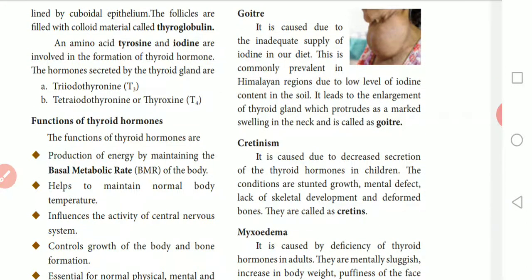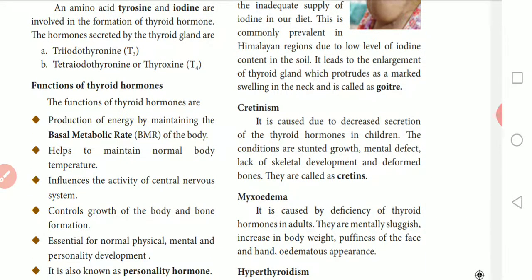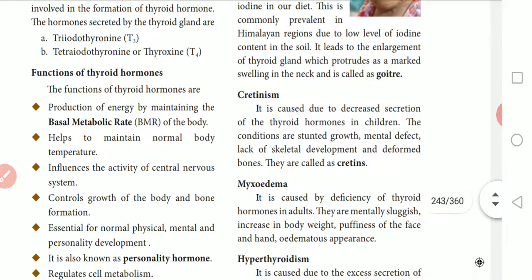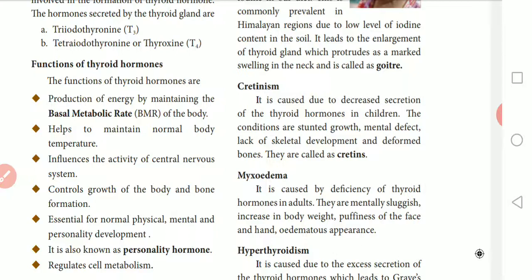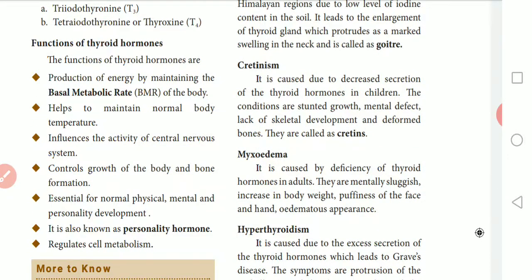The next disease is cretinism. It is caused due to decreased secretion of thyroid hormone in children. When children have a diet with low iodine levels, the condition leads to stunted growth, mental defects, lack of skeletal development, and deformed bones. Such affected children are called cretins.